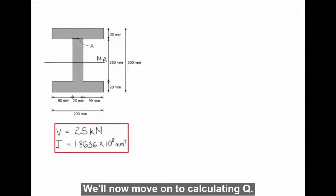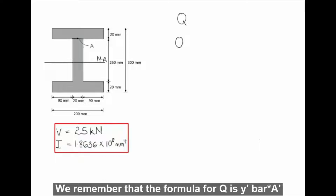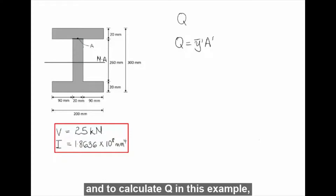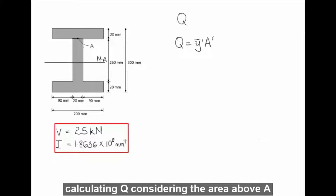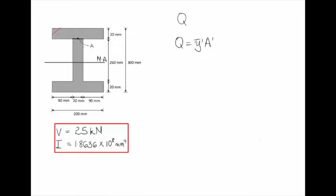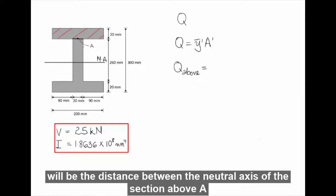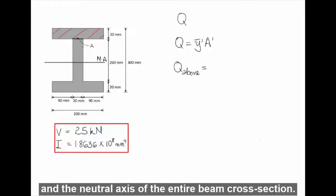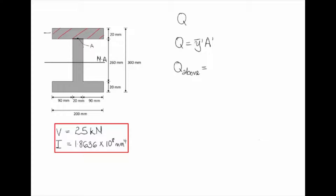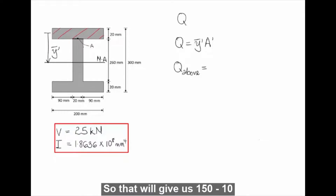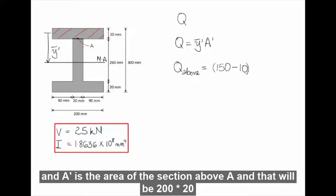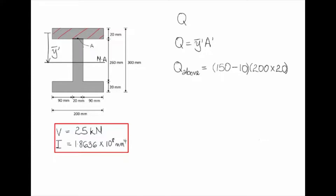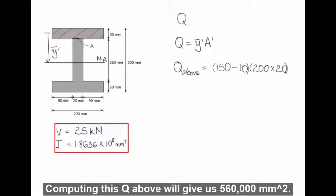We'll now move on to calculating Q. The formula for Q is y-bar-prime times A-prime. To calculate Q, we consider the area either above or below point A. Calculating Q above — the y-bar-prime is the distance between the neutral axis of the section above A and the neutral axis of the entire cross-section, giving 150 minus 10. A-prime is the area above A, which is 200 times 20. Computing this, Q above equals 560,000 mm³.